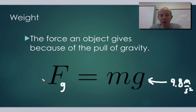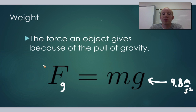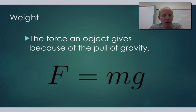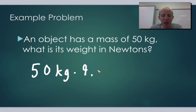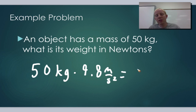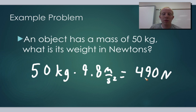You can almost think of it like a conversion factor. If you're given something in kilograms and you need to know its weight in newtons, all you need to do is multiply it by 9.8 meters per second squared, and that will give you the object's weight in newtons. For example, if we have an object with a mass of 50 kilograms and we want to know its weight in newtons, we take 50 kilograms times 9.8 meters per second squared, and that gives us 490 newtons.